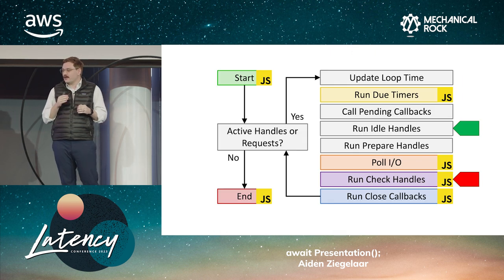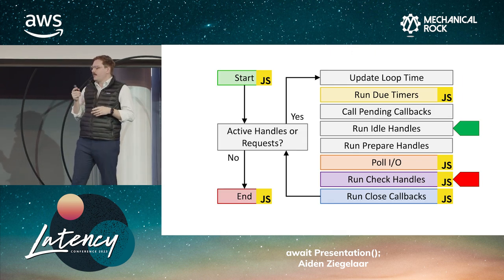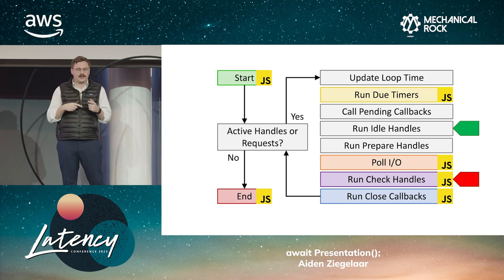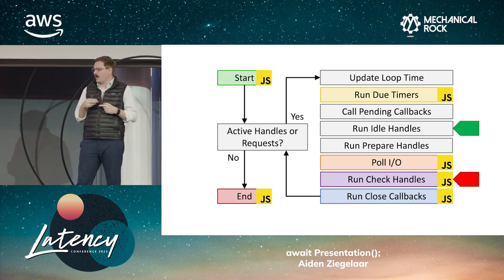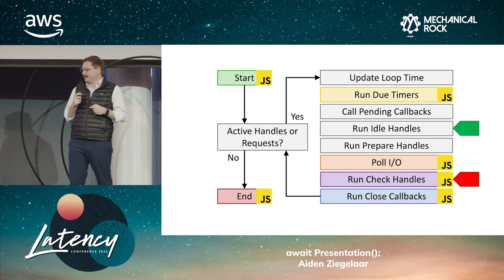Under the hood, setImmediate executes in the check handles phase, but when you call setImmediate, it will also register a self-cancelling idle handle so that when we hit the poll phase in the middle of our loop, it will not block.